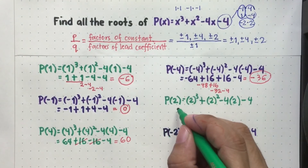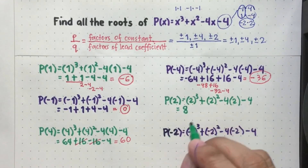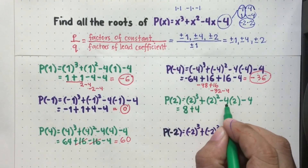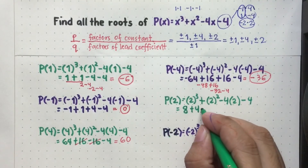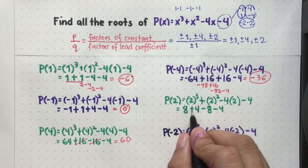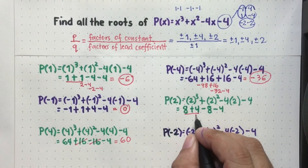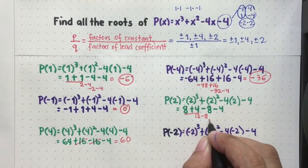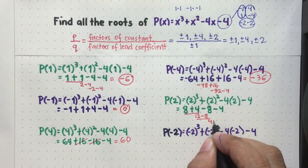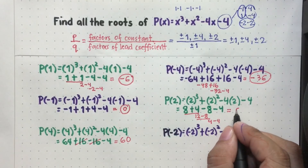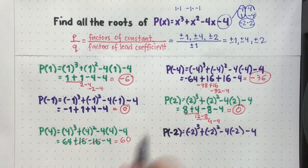Now P(2): 2 cubed is 2 times 2 times 2, which is 8. Then 2 squared is positive 4. Then negative 4 times 2 is negative 8. Copy negative 4. Solving: 8 plus 4 is 12, then 12 minus 8 is positive 4, then 4 minus 4 magiging 0 na siya. So 0 ang sagot. Ibig sabihin, yung positive 2 kasama na din siya sa zeros or roots ng ating polynomial.